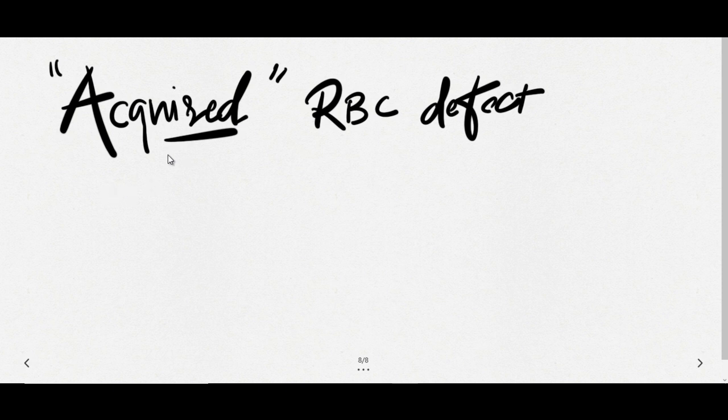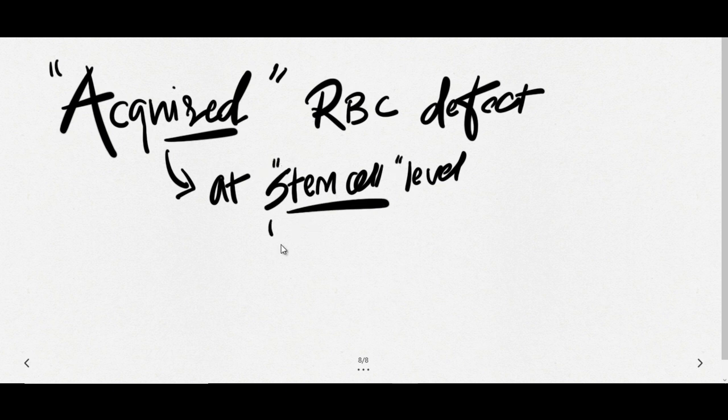Usually it is an intracellular disorder and at which stage it has been acquired in erythropoiesis, it is acquired at stem cell level. So they can ask you whether PNH is congenital or acquired. Answer is acquired. It is affecting which level in erythropoiesis? Stem cell level.